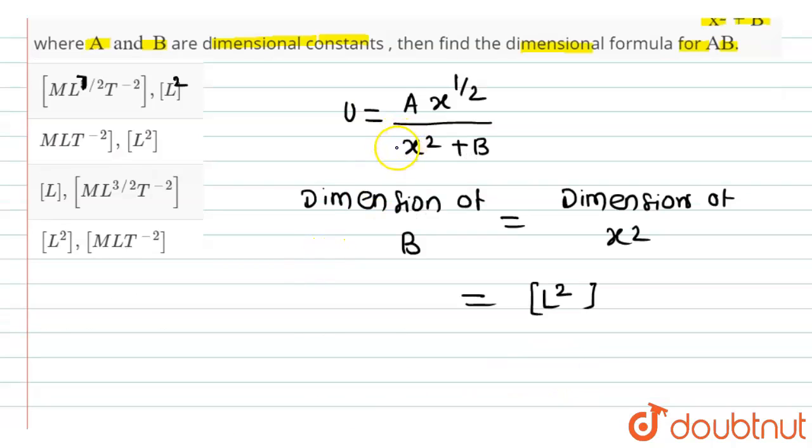Now to calculate the dimension of A, we can write the equation of A as: A will be equal to U into x square plus B divided by x to the power 1 by 2.